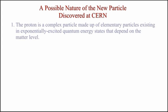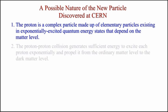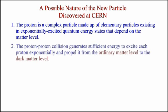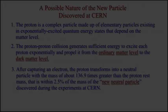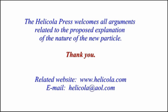A possible nature of the new particle discovered at CERN: first, the proton is a complex particle made up of elementary particles existing in exponentially excited quantum energy states that depend on the matter level; second, the proton-proton collision generates sufficient energy to excite each proton exponentially and propel it from the ordinary matter level to the dark matter level; and third, after capturing an electron, the proton transforms into a neutral particle with a mass of about 136.9 times greater than the proton rest mass. That is within 2.5% of the mass of the new neutral particle discovered during experiments at CERN. The Hericola Press welcomes all arguments related to the proposed explanation of the nature of this new particle.